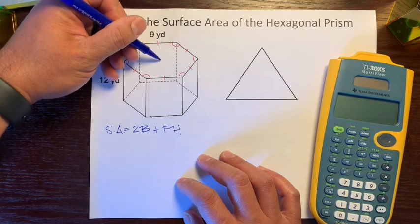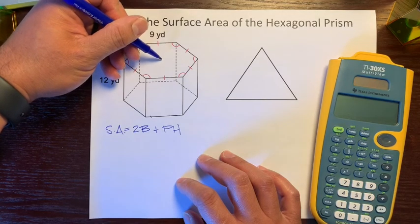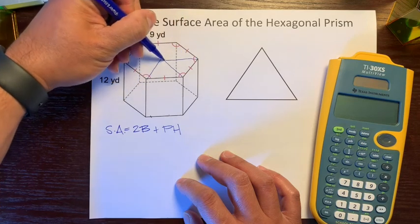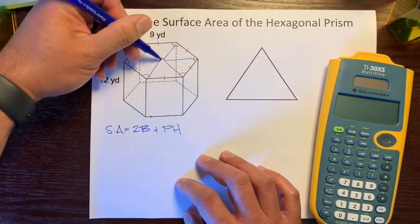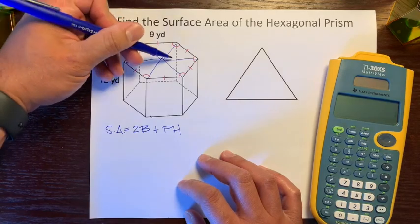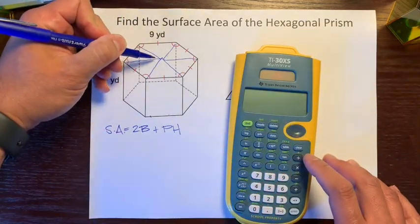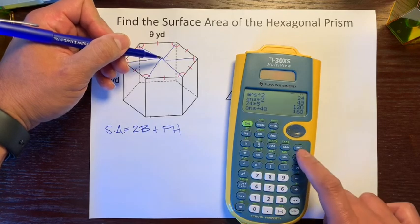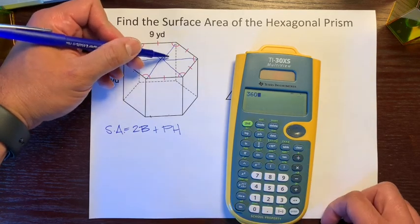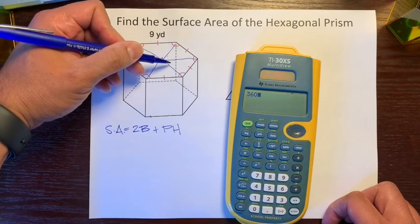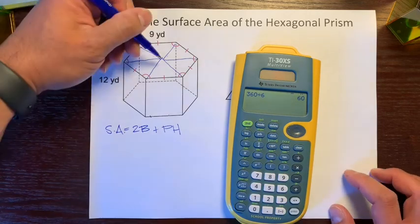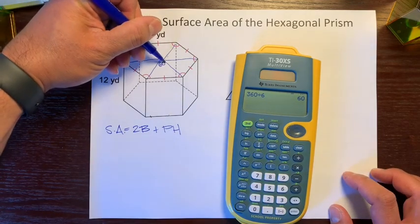So let's figure this out. If we divide this hexagon into triangles we would have six triangles. Finding the central angle: all the way around is 360°, so 360 divided by 6 angles makes each central angle 60 degrees.